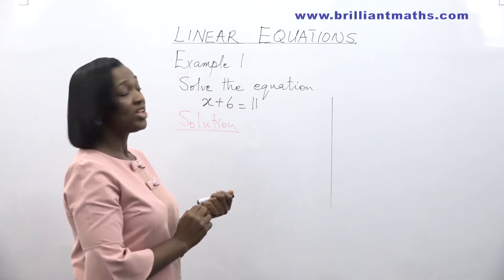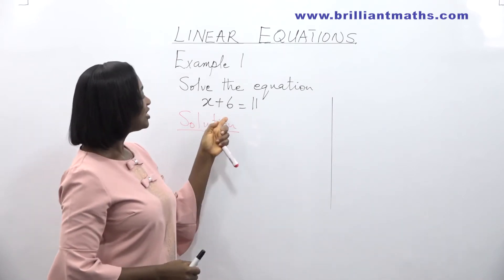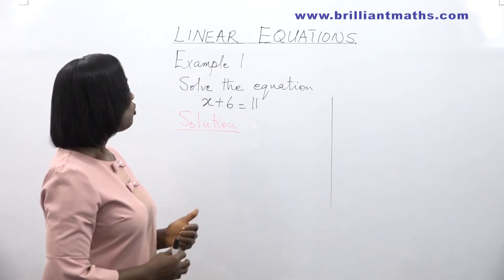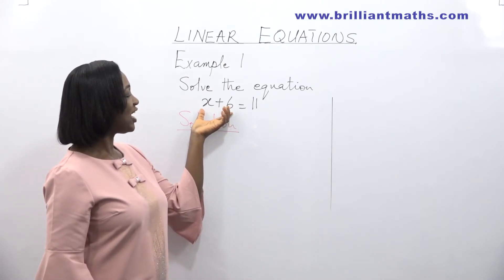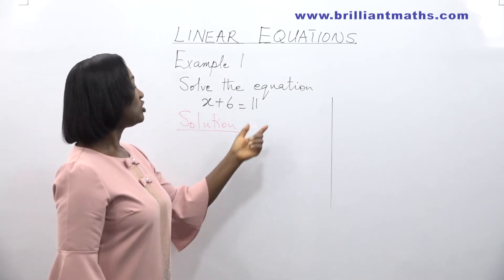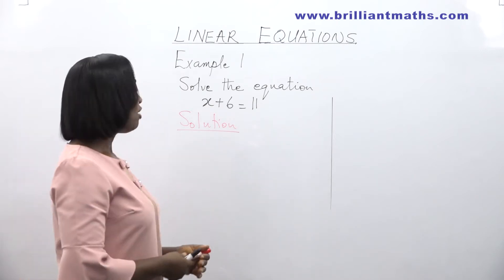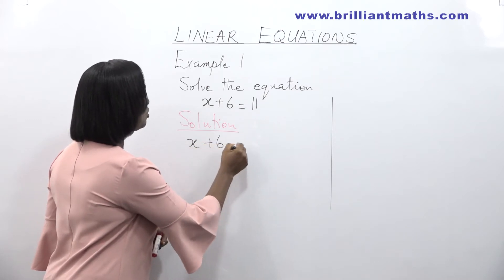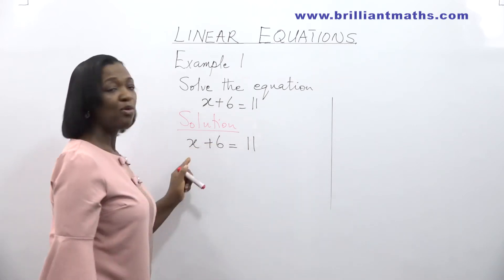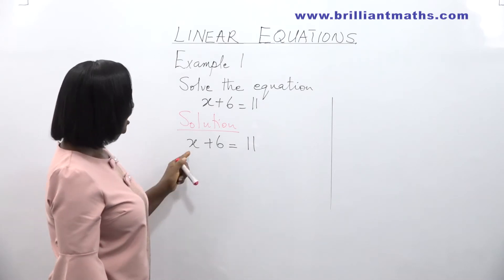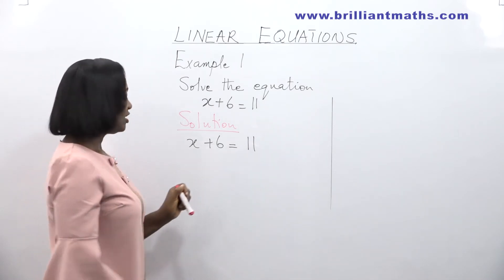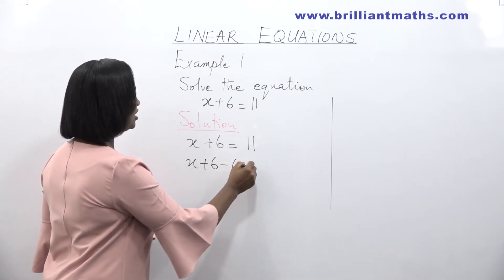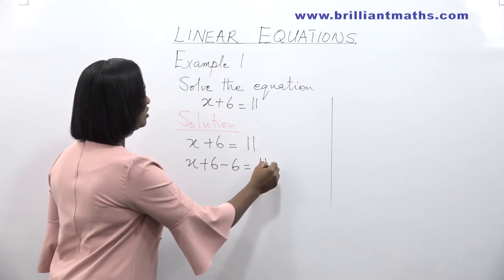There are two main ways you can find this. If x plus 6 is equal to 11, you could use a balancing method where whatever operation you carry out on the left hand side, you do the same operation on the right hand side. So x plus 6 is equal to 11. To get x, I need to take away 6. So I have x plus 6 minus 6 is equal to 11 minus 6.